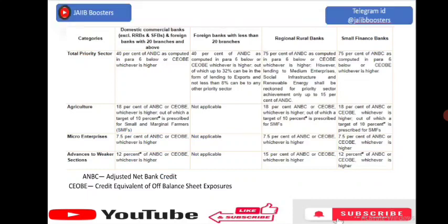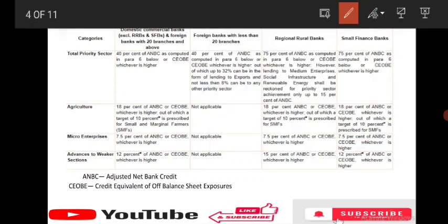How is total priority sector distributed? Domestic commercial banks — excluding RRBs, SFBs, foreign banks with 20 or more branches, and IBOs — must lend 40% of ANBC or CEOBE, whichever is higher. ANBC stands for Adjusted Net Bank Credit; CEOBE stands for Credit Equivalent of Off-Balance Sheet Exposures.